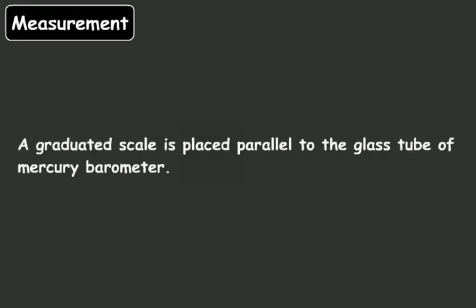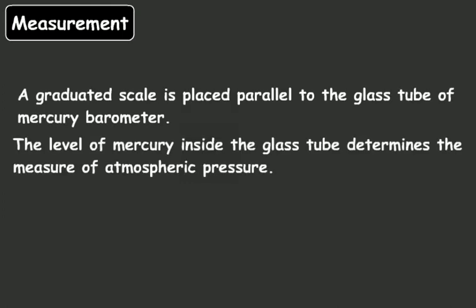A graduated scale is placed parallel to the glass tube of mercury barometer. The level of mercury inside the glass tube determines the measure of atmospheric pressure.